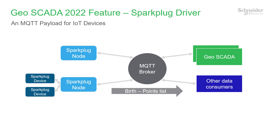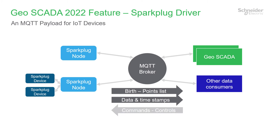In 2022 we also added the Spark Plug driver on MQTT. An MQTT broker allows publishers and subscribers to share data. Spark Plug is a data payload designed to carry SCADA signals from nodes and devices through the MQTT broker. Spark Plug payloads let you read signal information and data values, and also lets other data consumers read the same data.